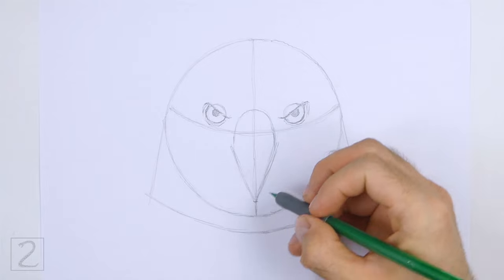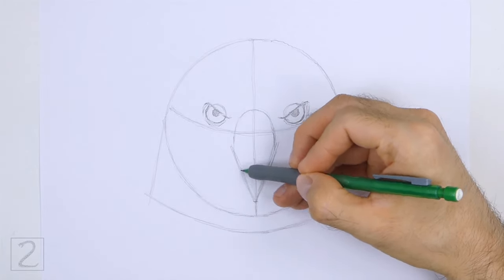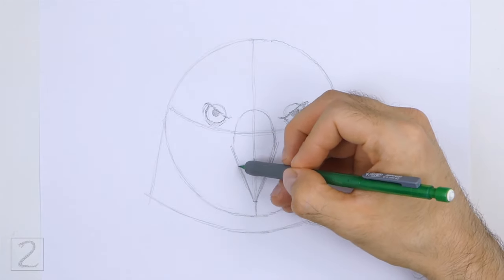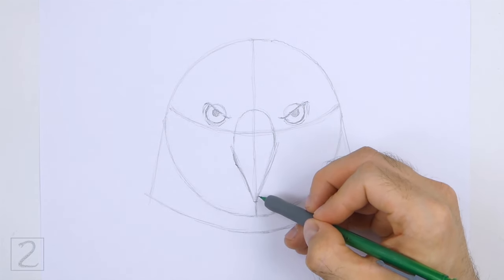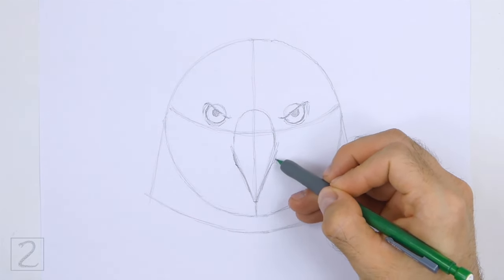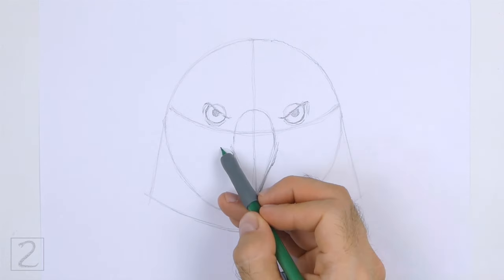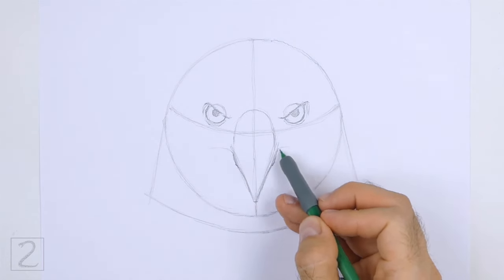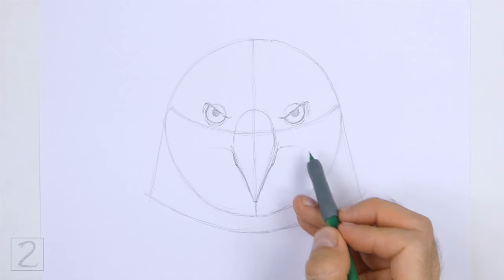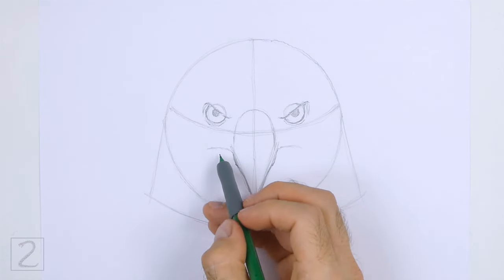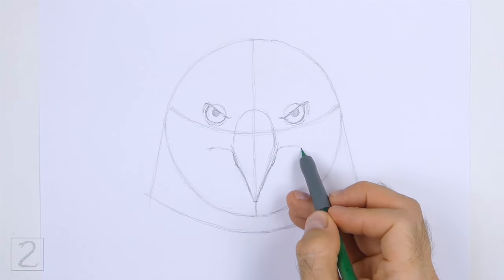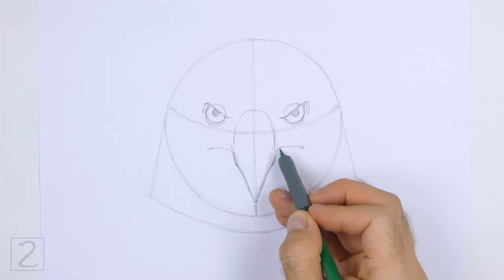Use the shape in the middle as a guide to draw the beak. Darken the bottom part of the shape for the tip of the beak. Make the tip of the beak thin and pointy. On the sides, draw curved horizontal lines for the mouth. Sketch lightly at first and only darken the lines when you get the shapes right.